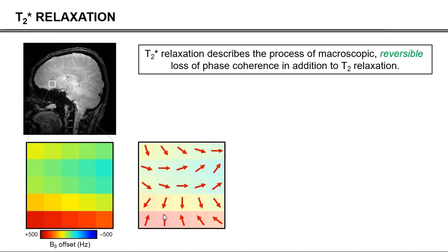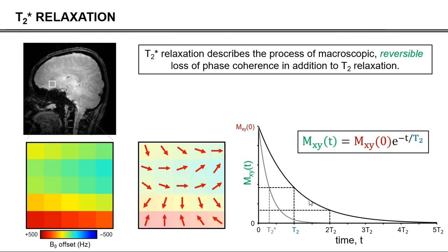Now, T2 and T2 star relaxation are exponential processes given by an equation something like this, in which the decay constant is equal to T2 or T2 star. It should also be pointed out that T2 star is always smaller than T2, and it is the purpose of magnetic field shimming to make T2 star as close to T2 as possible by reducing inhomogeneity in the magnetic field. That will be the subject of an entirely different video as well.